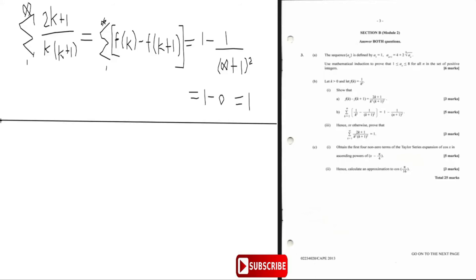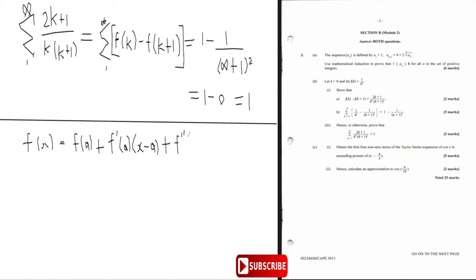Before we do that, let me write down the Taylor series formula. The Taylor series formula tells us that f of x equals f of a plus f prime of a times x minus a, plus f double prime of a times x minus a squared over two factorial, and it continues.